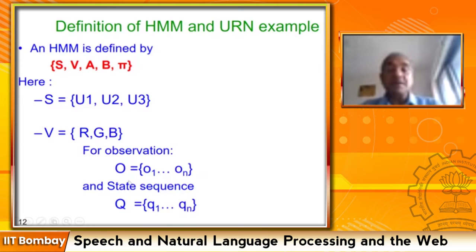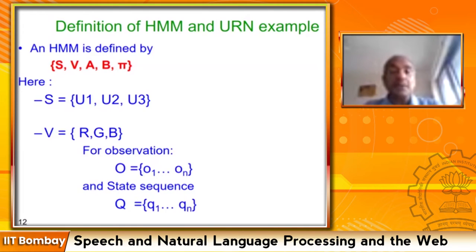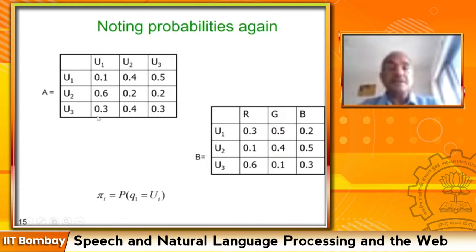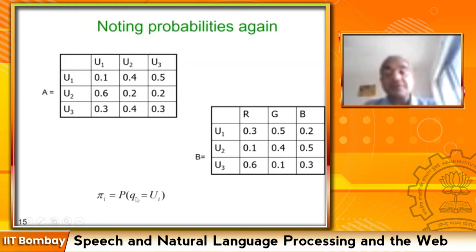The observations are R, G, B — red, green, and blue — corresponding to balls picked up and observed from the urns. An observation sequence has notation capital O, composed of o1 to on as a sequence. Importantly, O and the state sequence Q (q1 to qn) are sequences, not sets — that correction should be noted. π_i is the probability that q1 equals u_i.